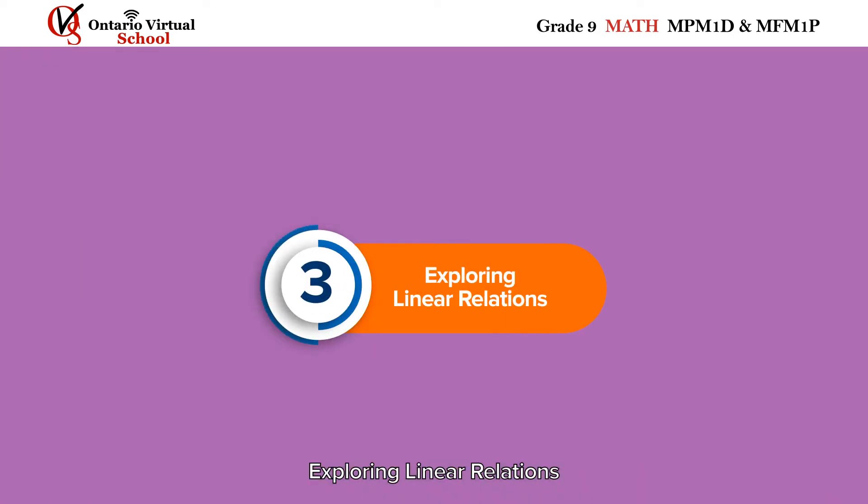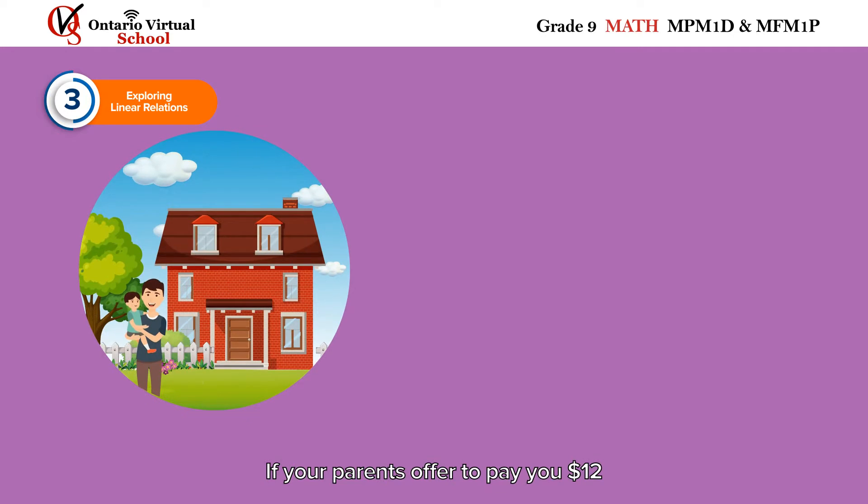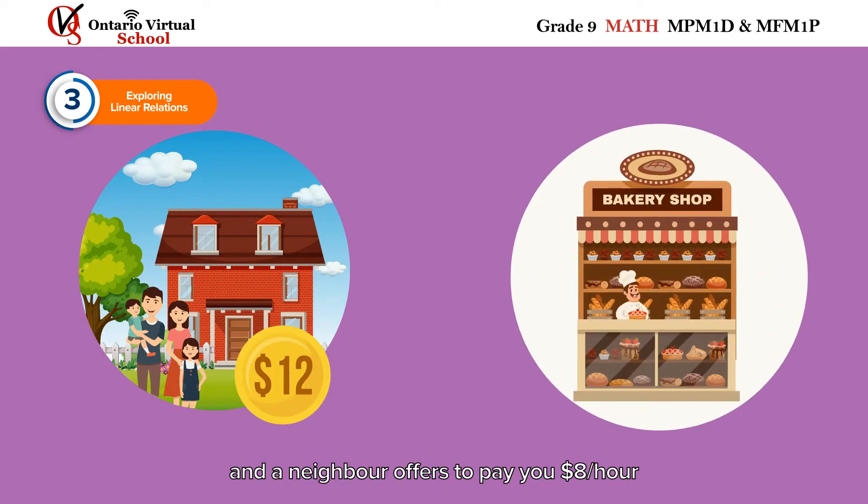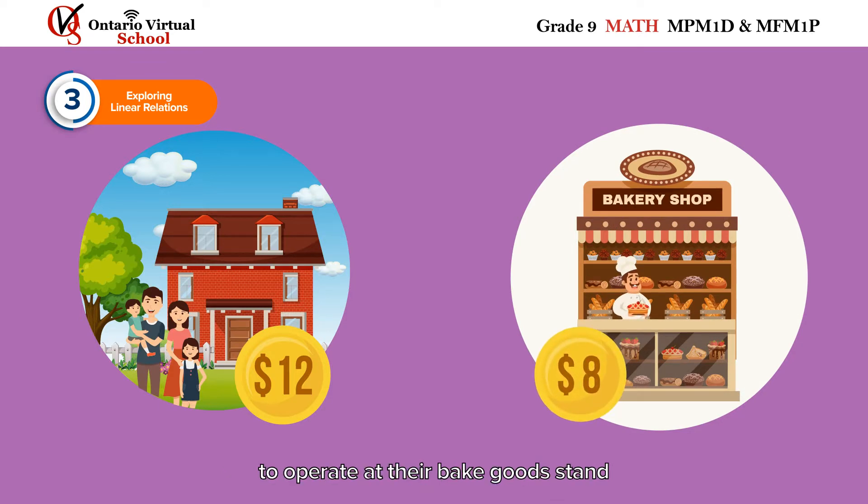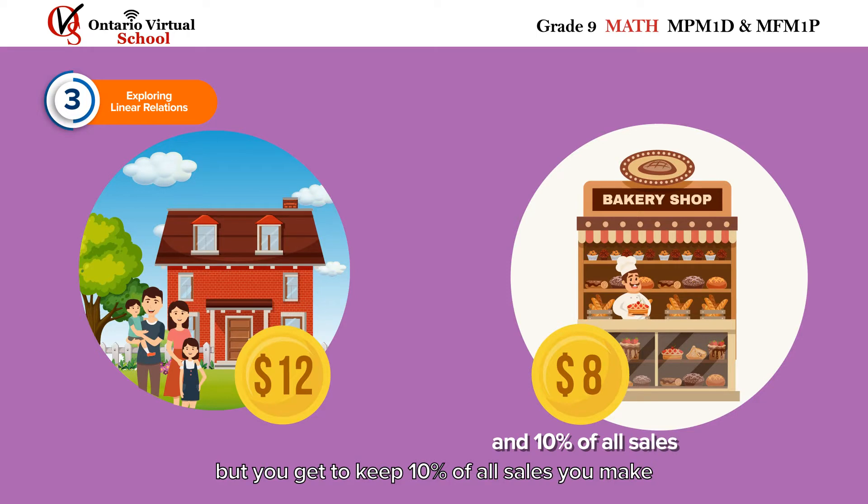Exploring Linear Relations. If your parents offer to pay you $12 an hour to help them around the house, and a neighbor offers to pay you $8 an hour to operate their baked goods stand but you get to keep 10% of all sales you make, which option would you pick?